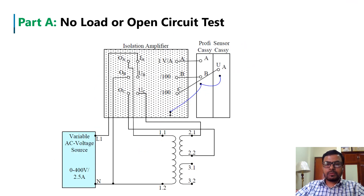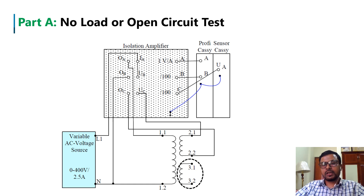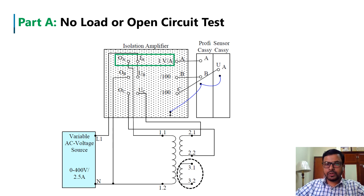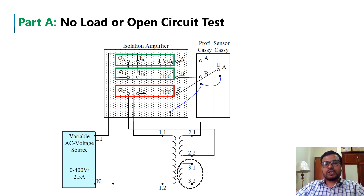This is the experimental setup for the no-load or open circuit test. As you can see, the third winding is not connected to anything — we are not using it. Channel A of the isolation amplifier is used for primary side current measurement, channel B is used for primary side voltage measurement, and channel C is used for secondary side voltage measurement. So we are measuring two voltages and one current from this no-load test.